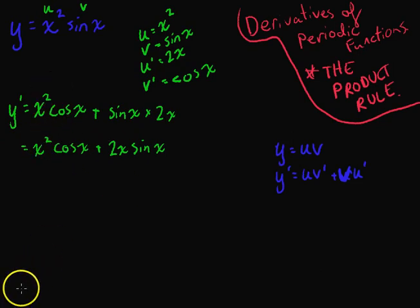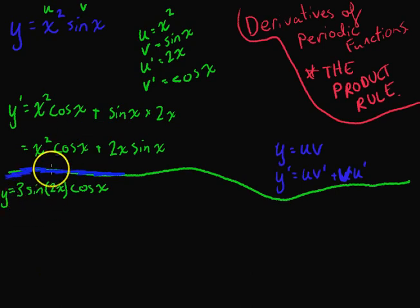That's really it for that. You don't really need much more there. Here's the second example. y equals 3 sine 2x cos x. Now this is a slightly more complicated example, because our u, 3 sine 2x, and our v cos x, are both periodic functions. So we've got y equals uv, same as before. We need to use that formula, y dash equals uv dash plus vu dash.